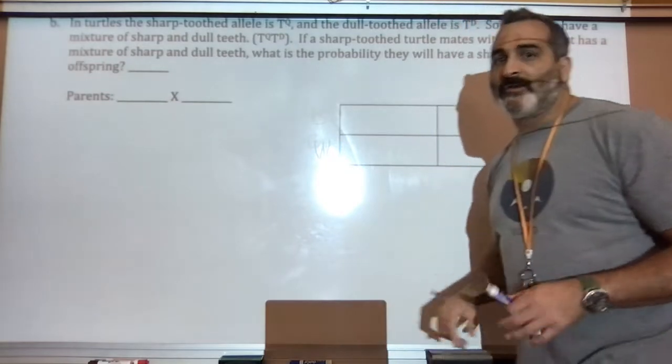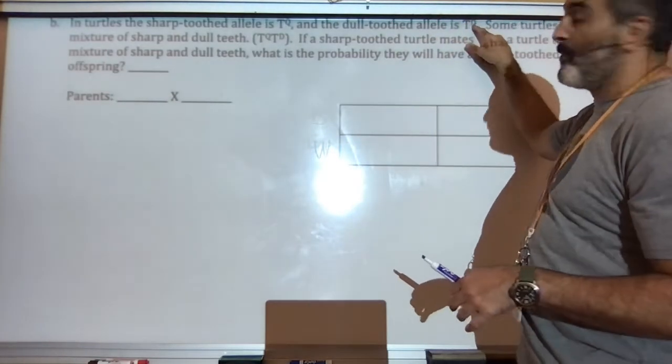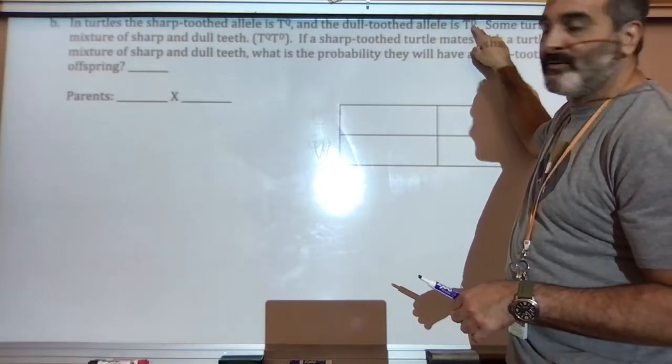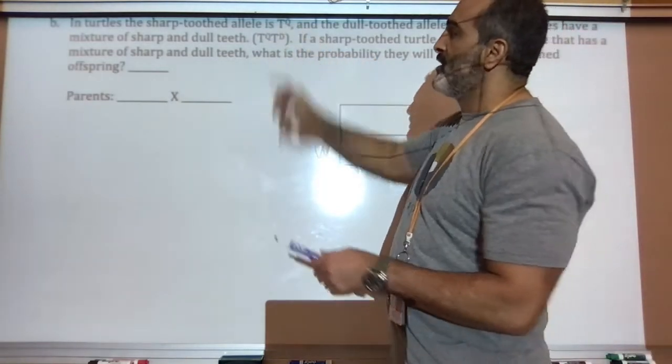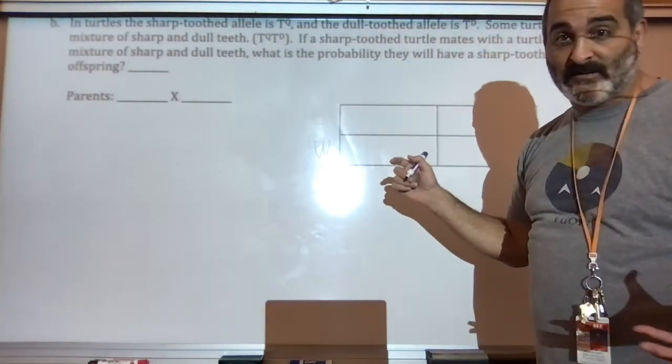The dull tooth allele is T with a capital D. That's a capital D. That's a capital Q. So, sharp teeth are Qs. Dull teeth are Ds.